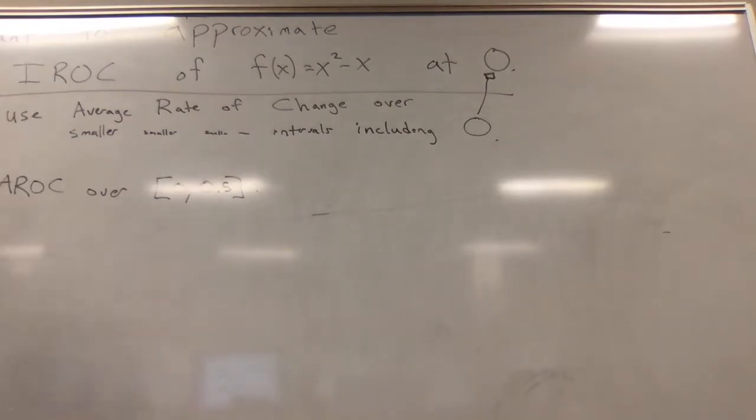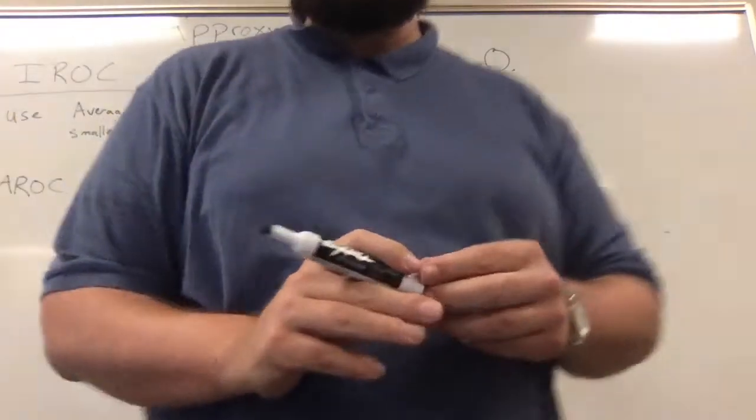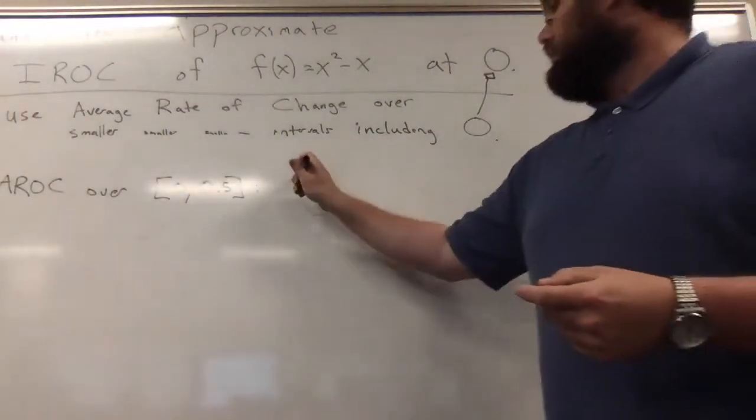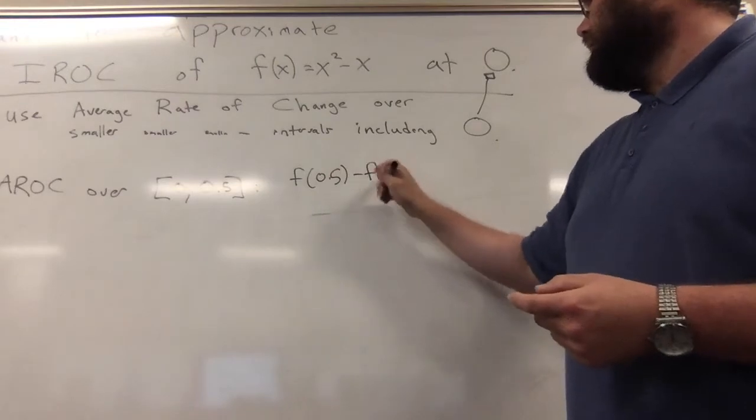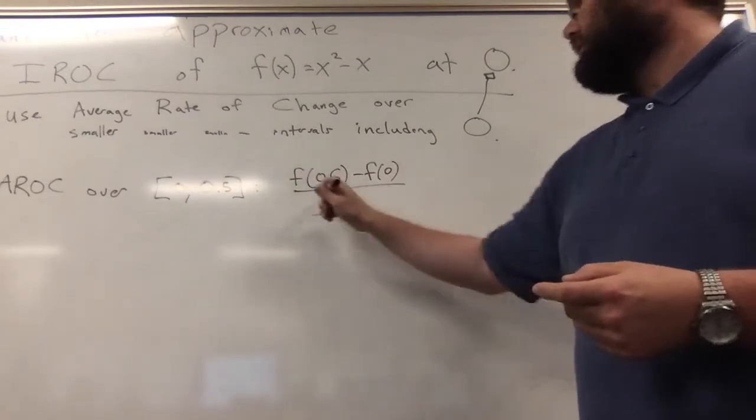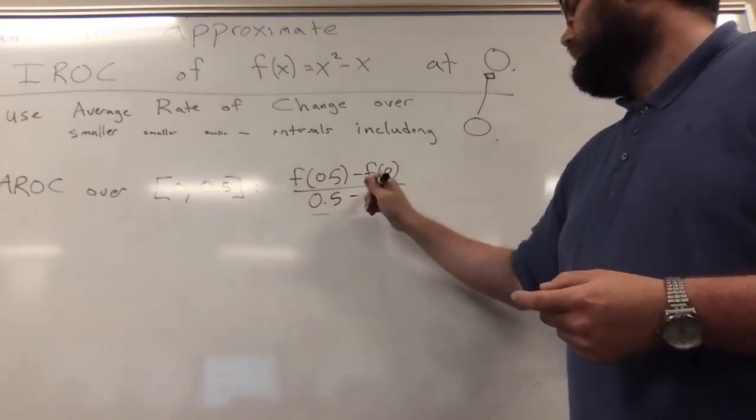We're going to do a sequence of these calculations and the sequence will lead us towards better and better approximations. So I would look at f(0.5) - f(0) over 0.5 - 0.